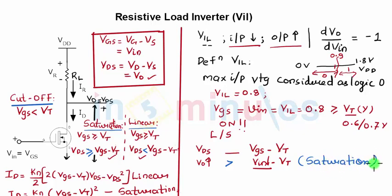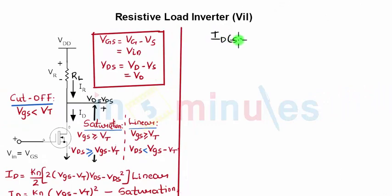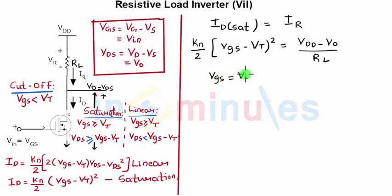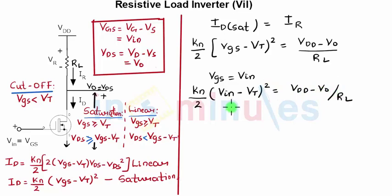So what I need to do is equate the current in the saturation region to the current IR flowing across the resistor. The saturation current is KN/2 · (VGS − VT)², which equals IR = (VDD − Vout) / RL. Substituting VGS = VIN, the equation becomes: KN/2 · (VIN − VT)² = (VDD − Vout) / RL. This is equation 1.